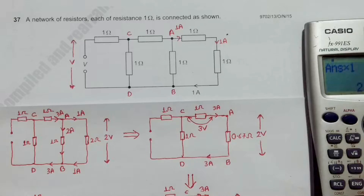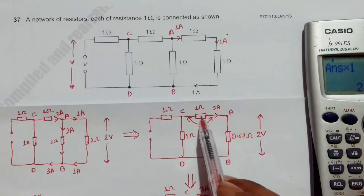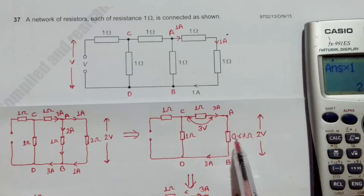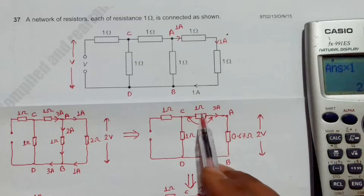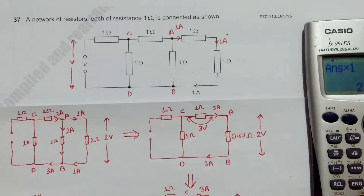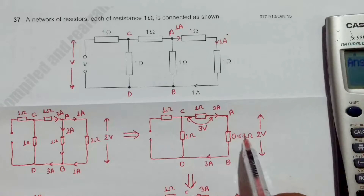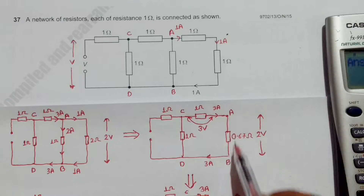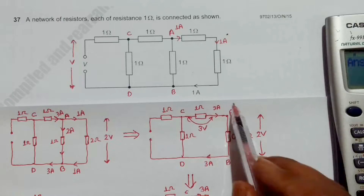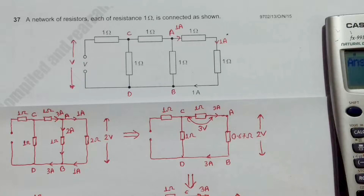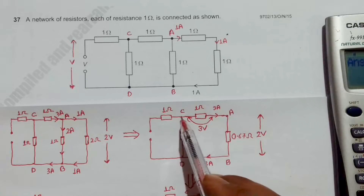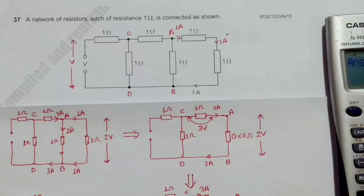Now the 1 ohm and 0.67 ohm are in series, so the total resistance is 1.67 ohm. Since this section has 3 volt and the AB section has 2 volt, the total combined voltage across CD is 3 + 2 = 5 volt. So we have 5 volt across CD.